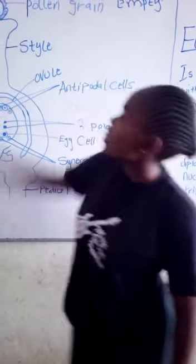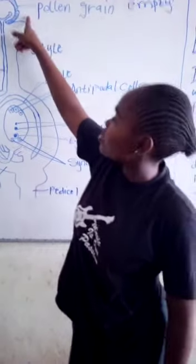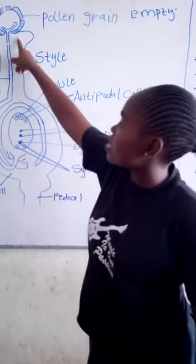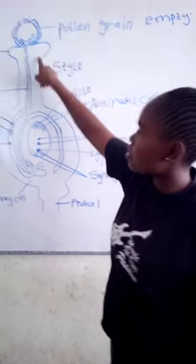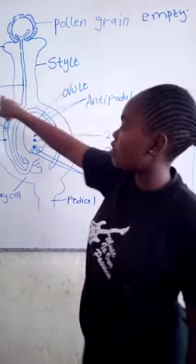After pollination, the pollen gets nutrients from the stigma, which results in the formation of the pollen tube.